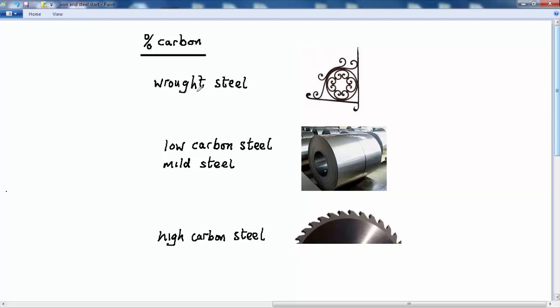So the first type is wrought steel, and that contains 0% carbon, so all of the carbon has been removed. This is quite a soft steel, and therefore quite malleable. But it's not as hard or strong as the other types of steel which we'll look at, and so it's not really very useful for structural purposes. It is, however, useful for ornamental work. You can bend it and shape it easily, for example, into wrought iron fencing.